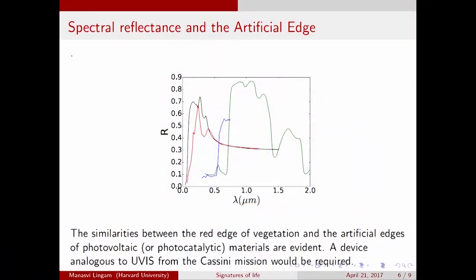Let me show you the spectra of the reflectance for different materials. The one in green is for an oak leaf, and you can see a very sharp rise in reflectance at around 0.7 micrometers — this corresponds to the red edge. The curve in black is silicon, the curve in red is germanium, and the one in blue is perovskite. All of these are photovoltaic materials, but one can also construct similar reflectance curves for materials used in artificial photosynthesis, photocatalysis, and so on. In all of them, one can expect to find distinctive spectral edges.